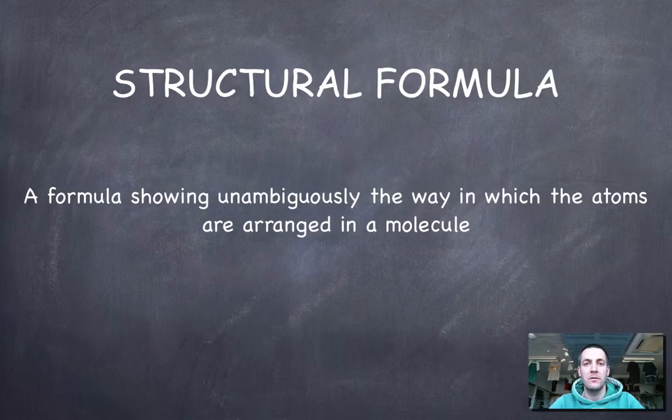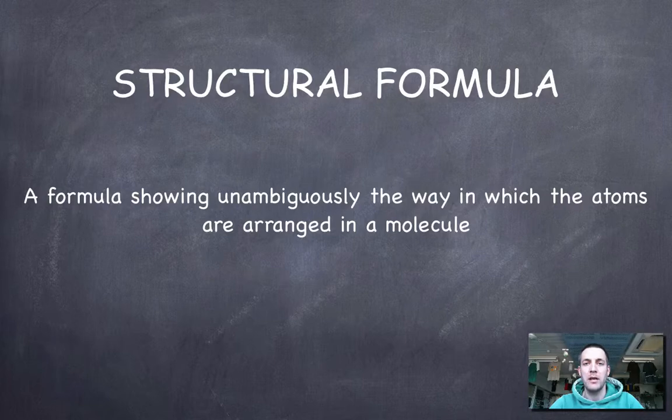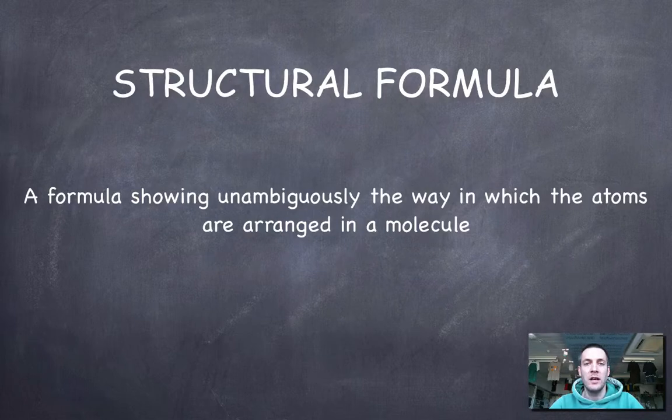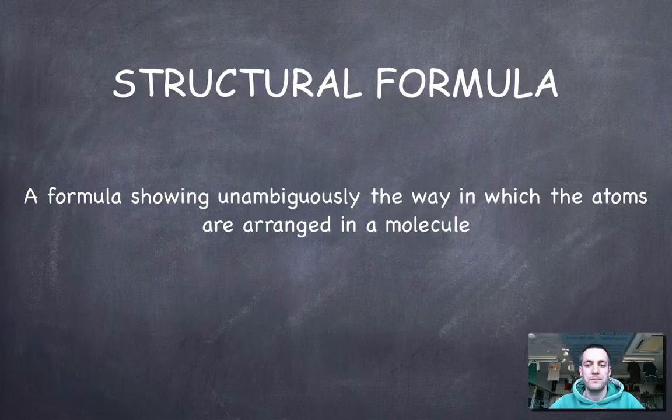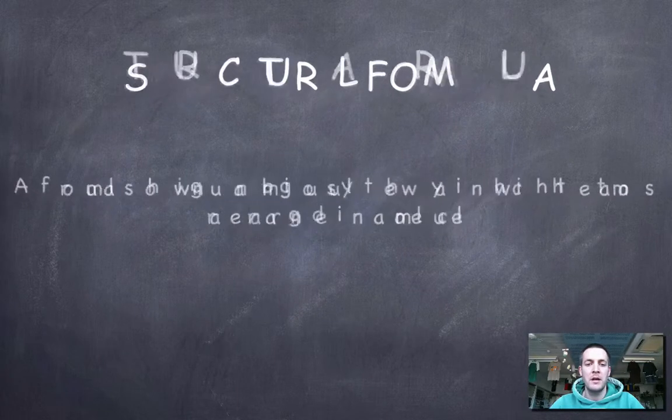Finally, the last type of formula that we need to know for organic chemistry is called the structural formula. This is a formula that shows unambiguously, so in other words it leaves us in no doubt about the way in which the atoms are arranged in a molecule. So there are the definitions. Make sure perhaps you write them down but certainly that you remember them.